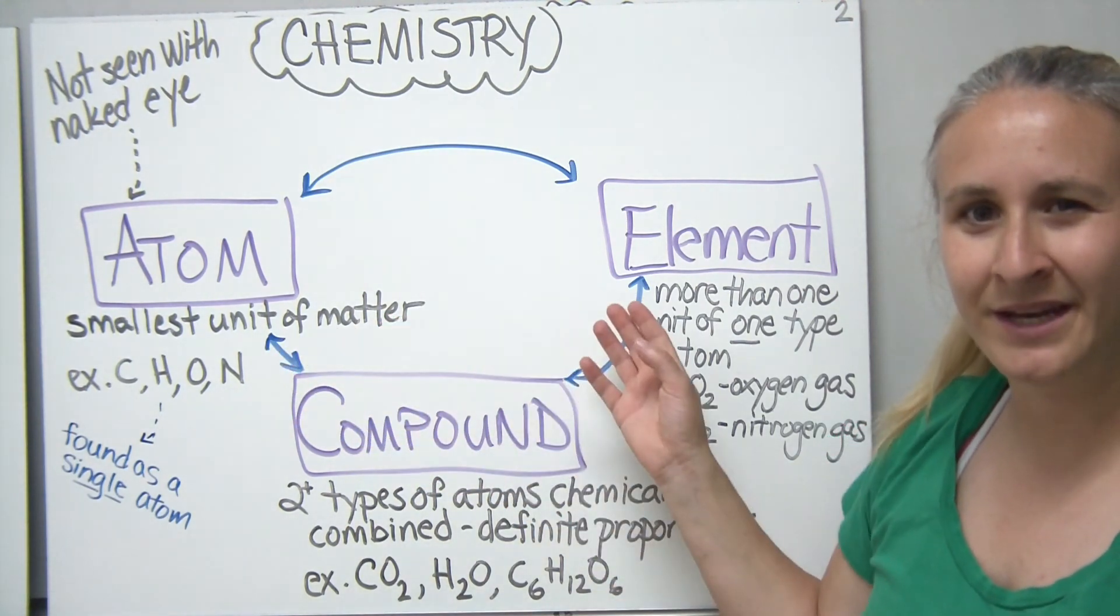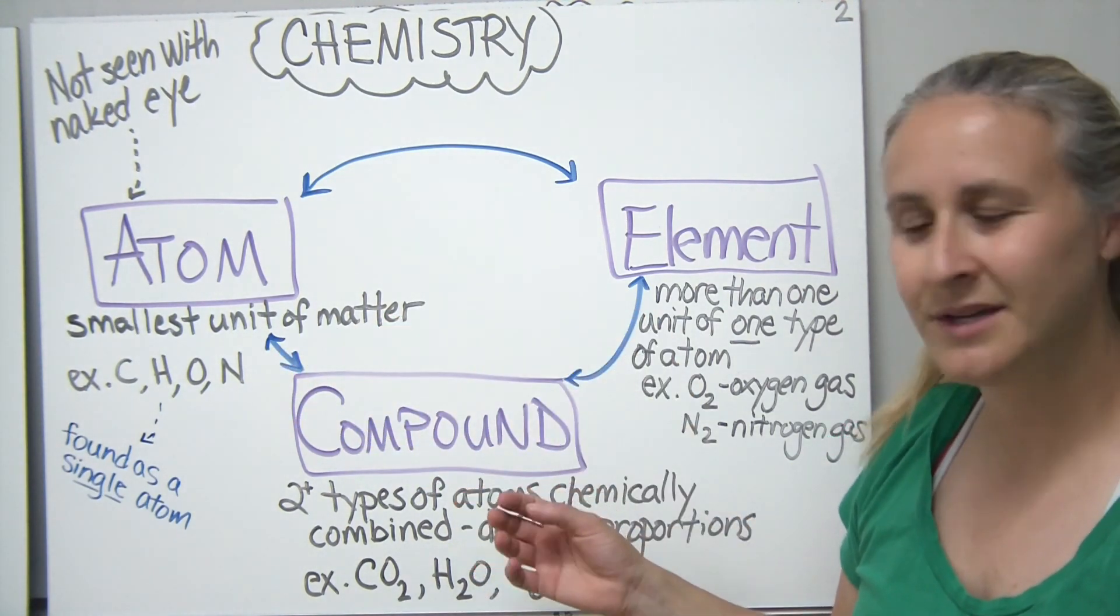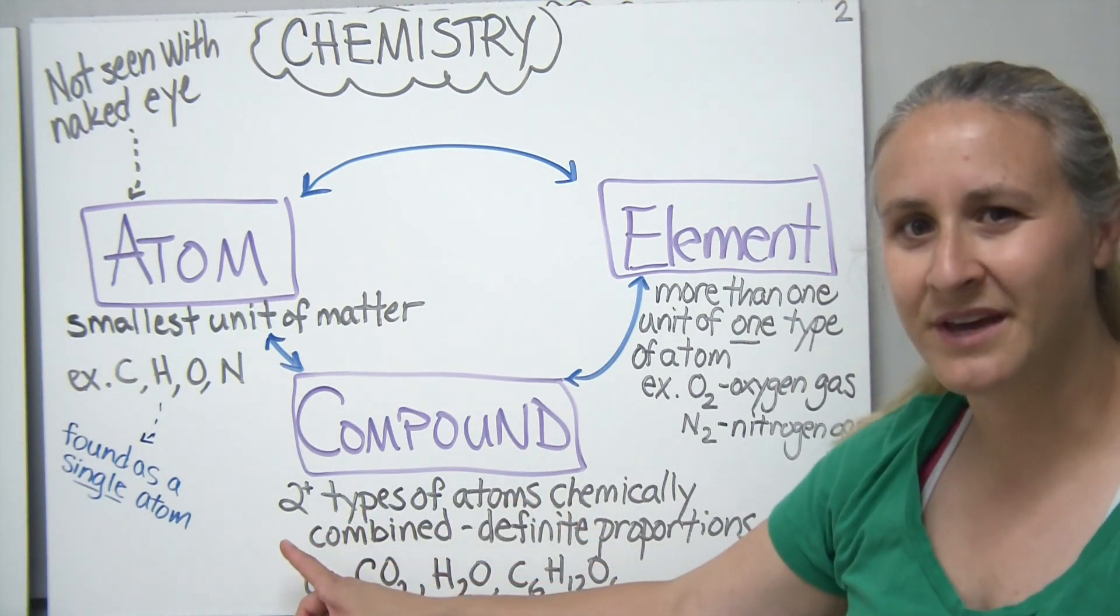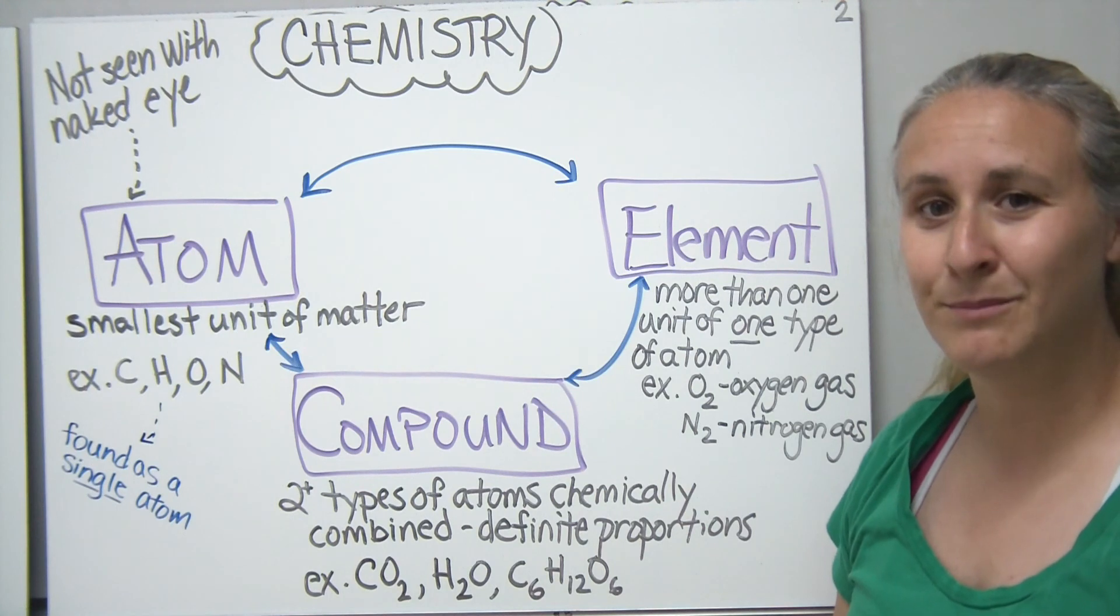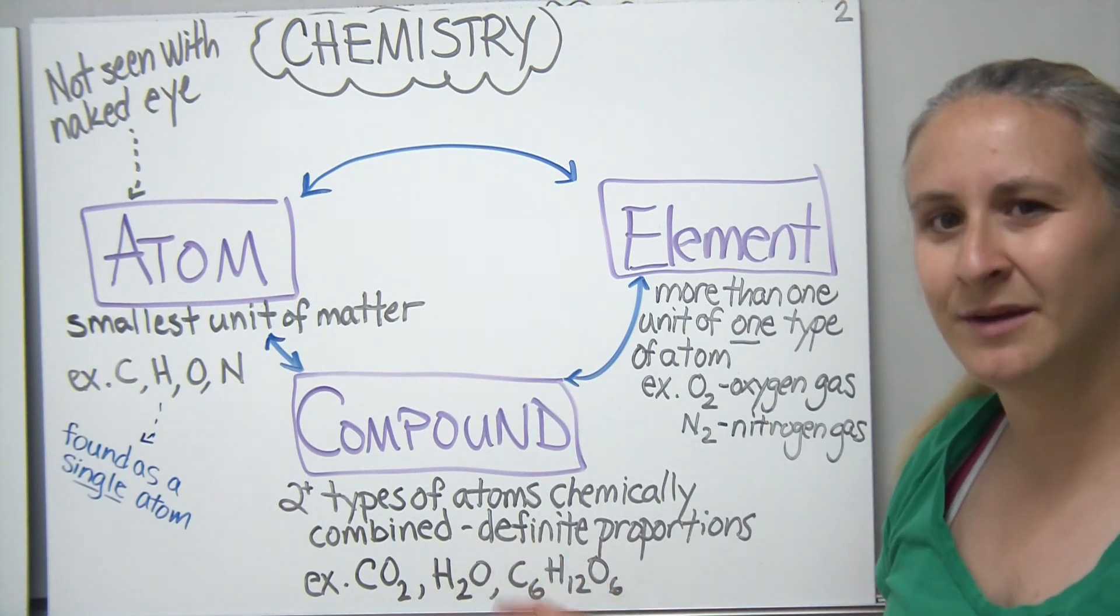Now how does an atom and an element relate to a compound? Well a compound, the formal definition, are two or more types of atoms that are chemically combined in definite proportions.